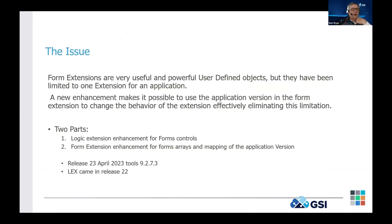The enhancement in release 23 April, tools 9.2.7.3, was to allow the logic extension to have form control features in it, and then for the form extension to call that logic extension and map in to the array or data set in your logic extension. This will make more sense when I show it live. You can map the fields and buttons off the form that you want to hide, show, or even highlight with color coding.